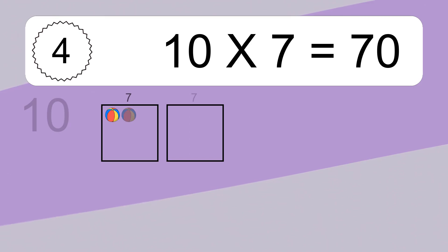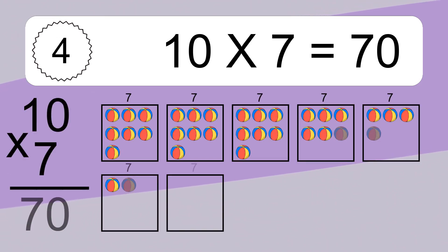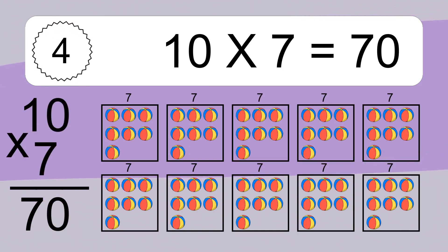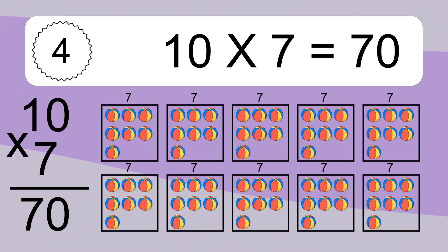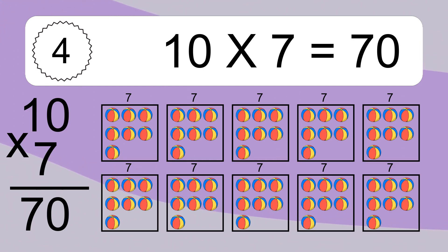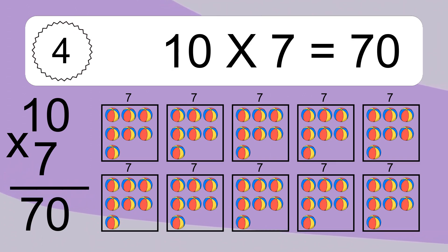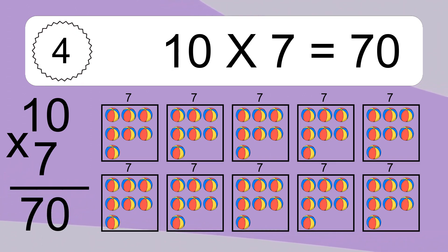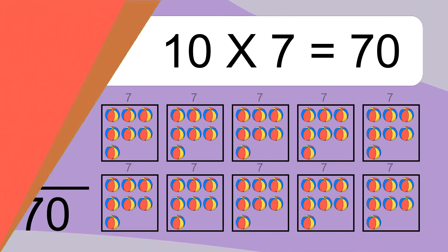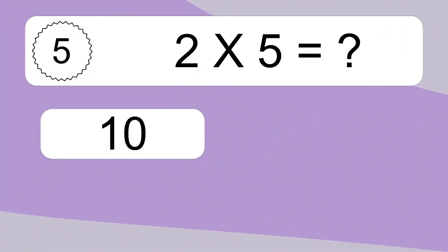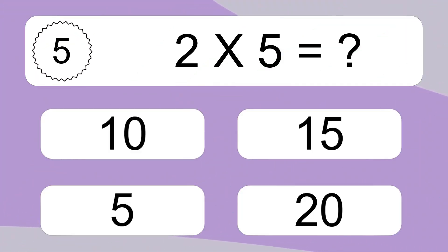10 times 7 equals 70. We have 10 boxes, and each box has 7 colorful balls inside. If you count all the balls in all the boxes together, you will have 10 times 7 balls. This equals 70 balls.